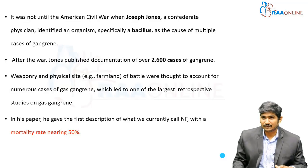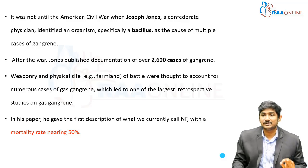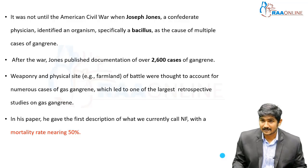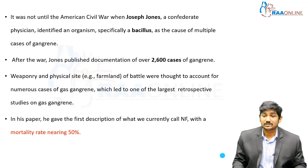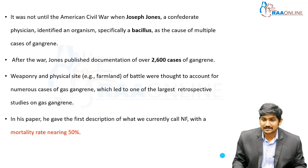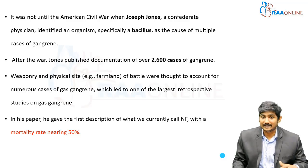Around the time of the American Civil War, Dr. Joseph Jones, a physician, identified a specific bacillus as a cause of multiple gangrene. He documented 2,600 cases of gangrene from that war era. The weaponry and the physical site — the farmland of battle — was thought to account for these numerous cases of gas gangrene. This is one of the largest retrospective studies on gas gangrene, with mortality up to 50%.